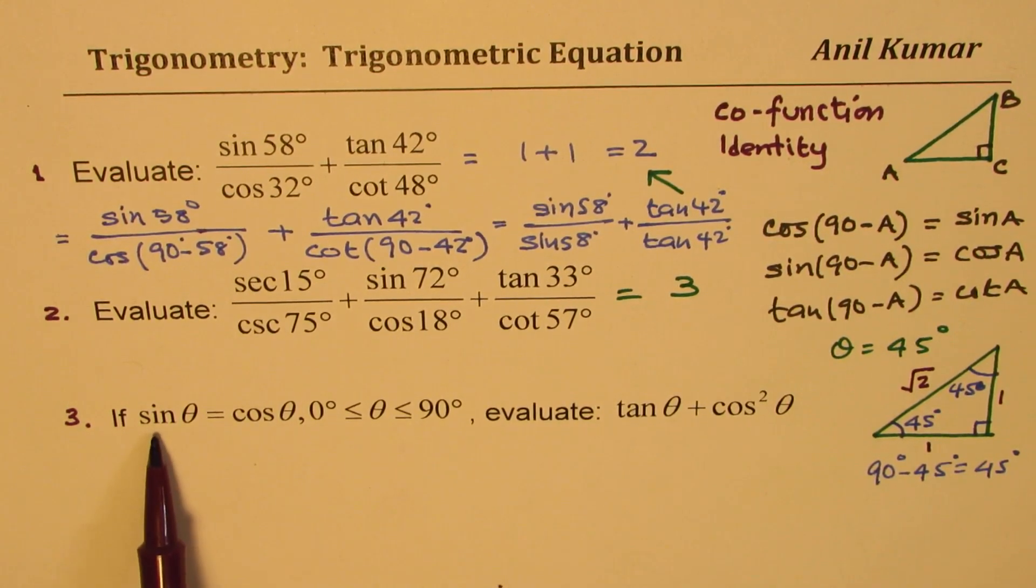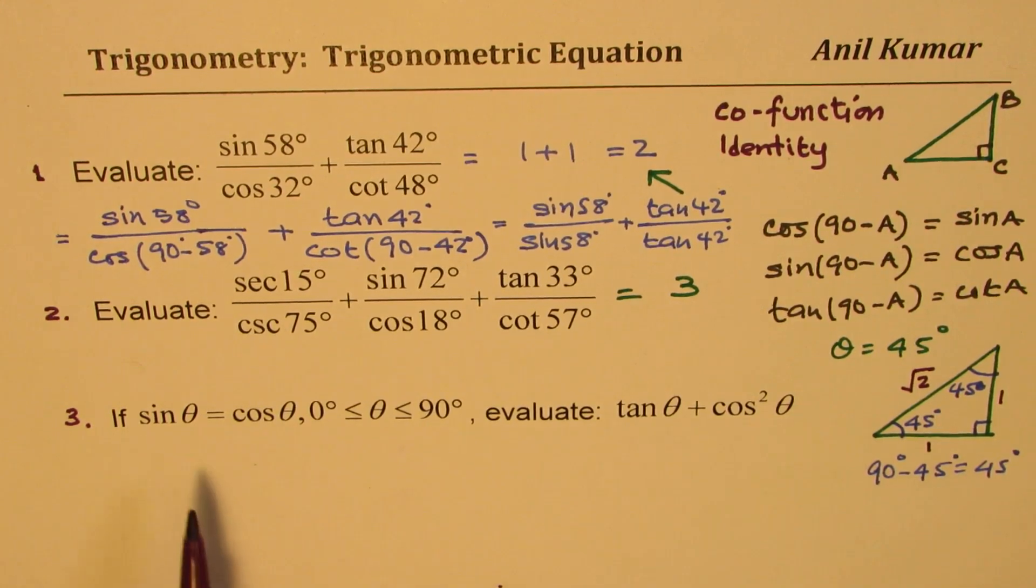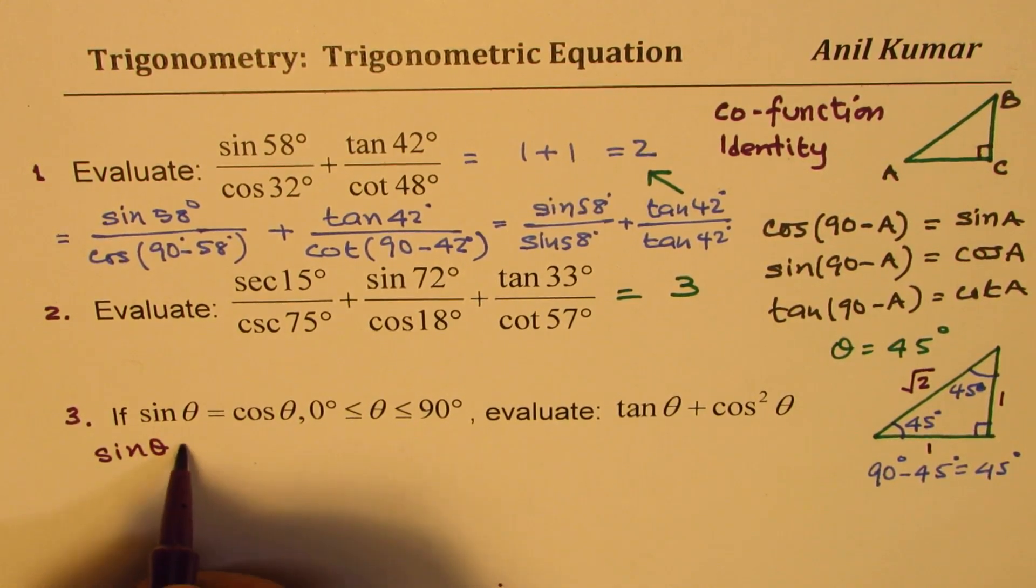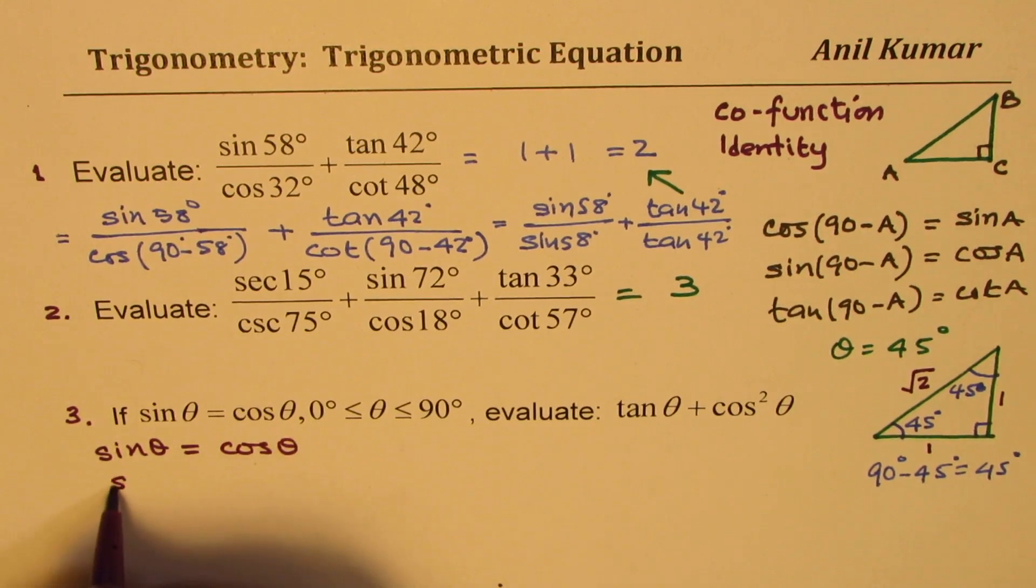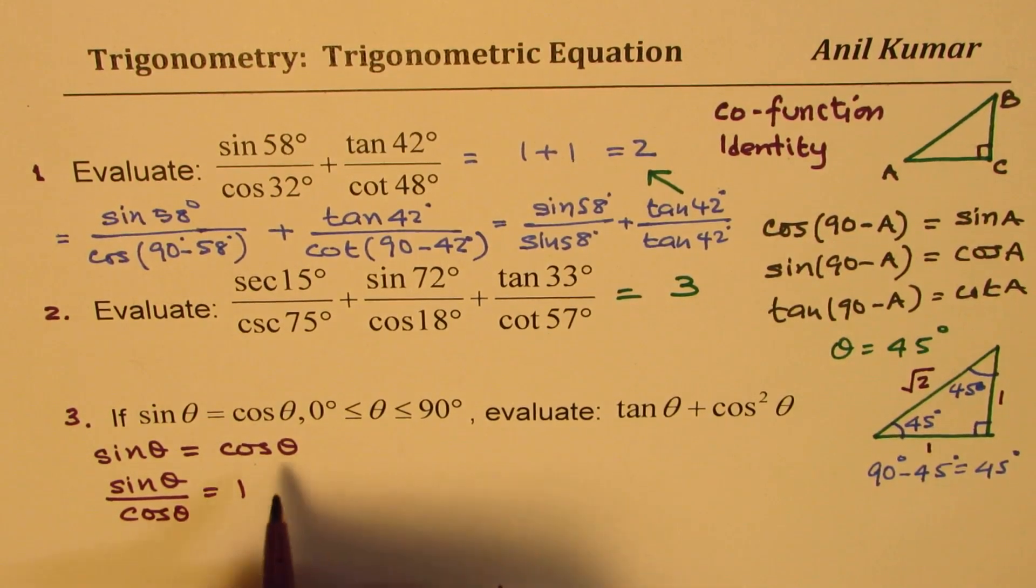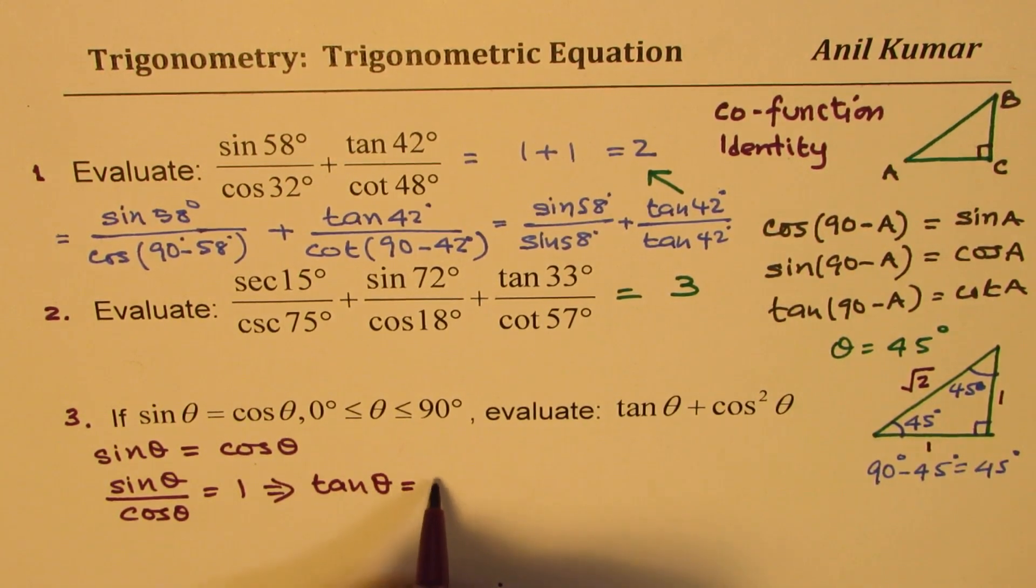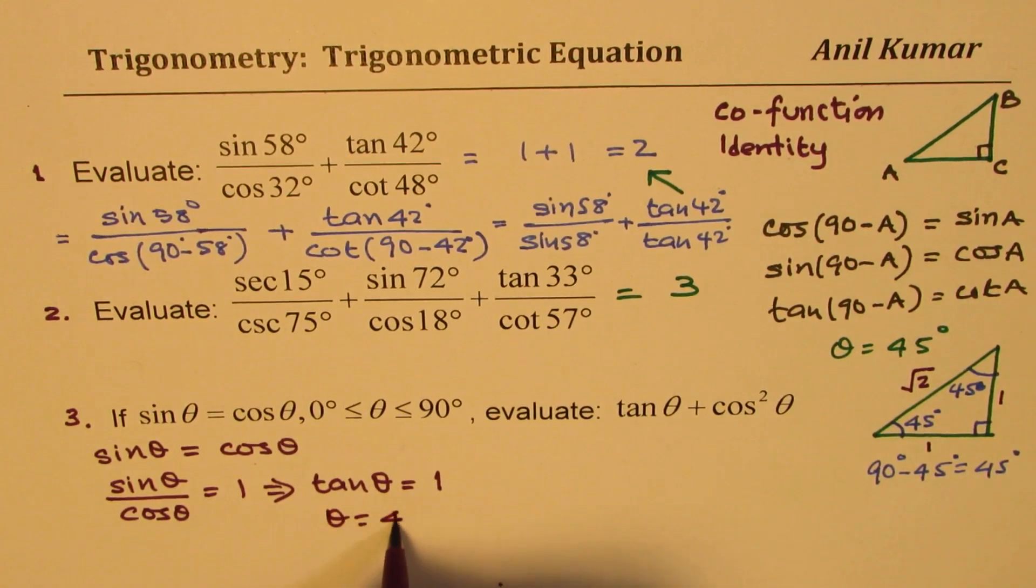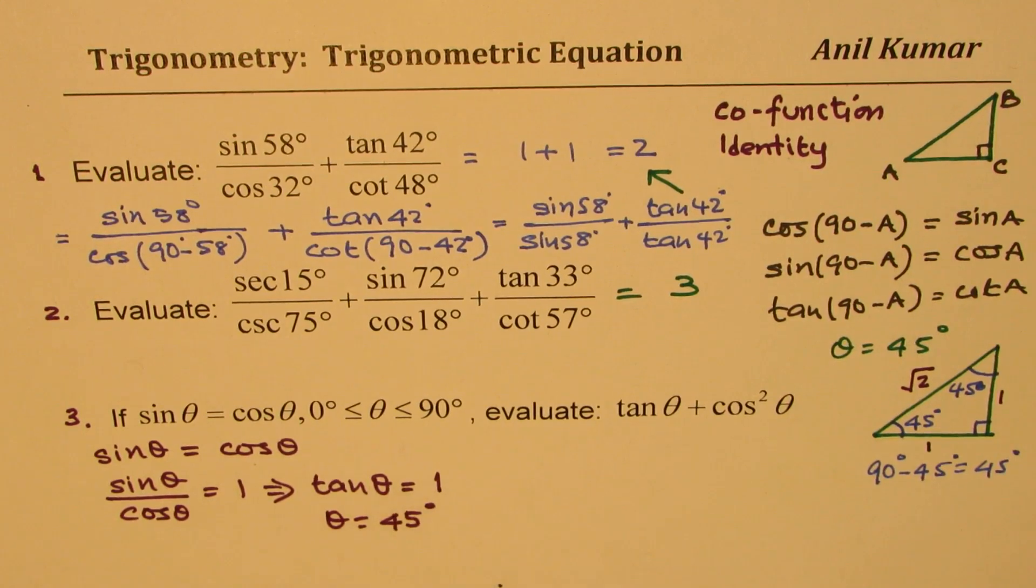Both values of sine theta and cos theta, when they are equal, they are 1 over square root 2. So you could also do like this. You could write this as sine theta equals to cos theta means you could write this as sine theta divided by cos theta equals to 1. And that means sine theta divided by cos theta is tan. So that gives you tan theta equals to 1. This is possible when theta is equal to 45 degrees. You could do tan inverse and find.